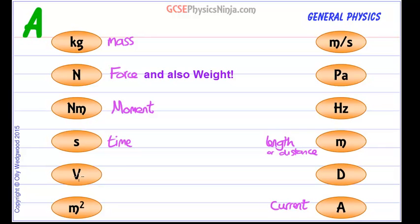V stands for volts and it is the quantity called potential difference. That's the driving force of a battery on a circuit which makes the current flow around the circuit, potential difference, sometimes called voltage.